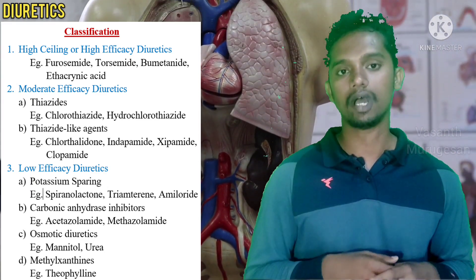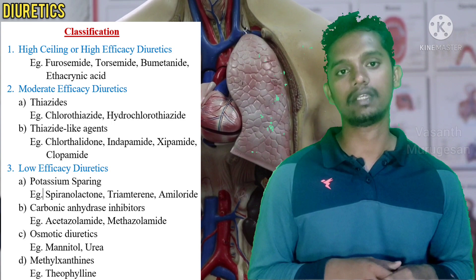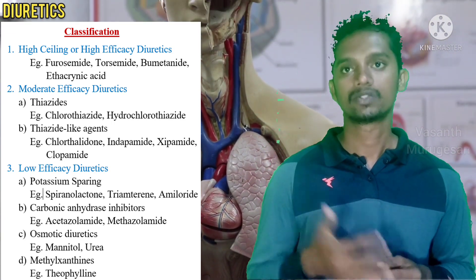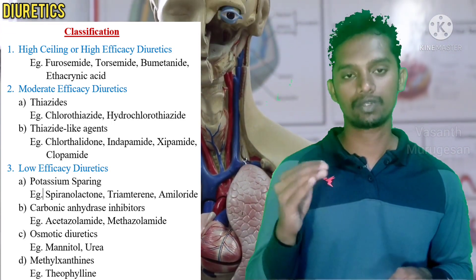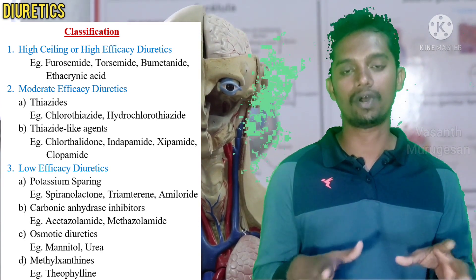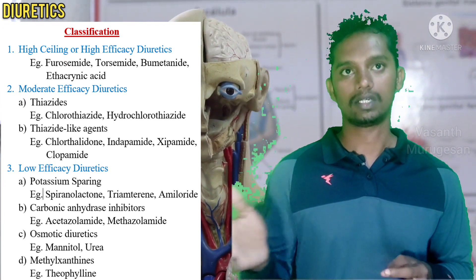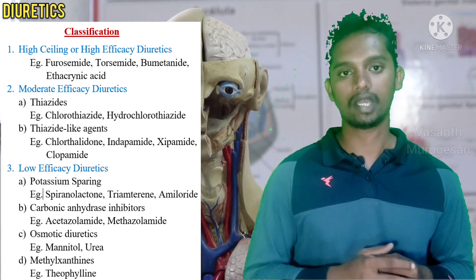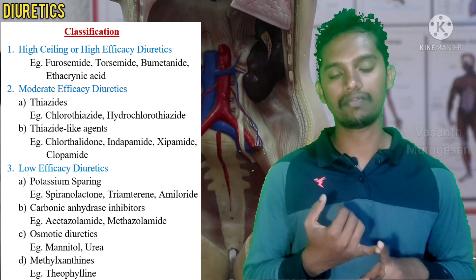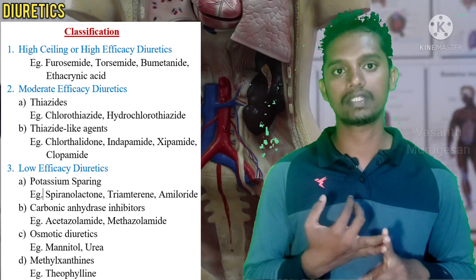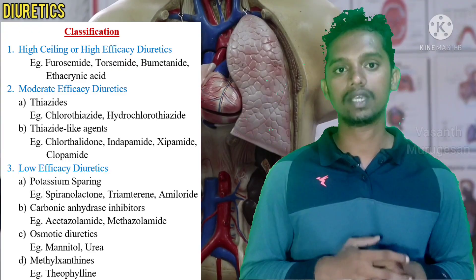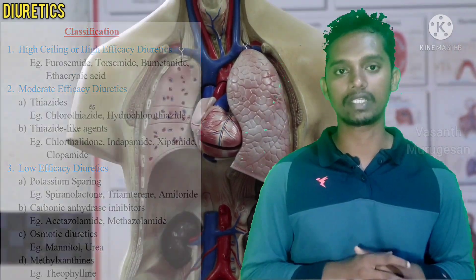The third subcategory of low efficacy diuretics is osmotic diuretics — example drugs are urea and mannitol. The fourth subcategory is methylxanthines — the example drug is theophylline. So altogether these four subcategories are grouped to form low efficacy diuretics. Overall, high efficacy, moderate efficacy, and low efficacy diuretics form the three classes of diuretics.